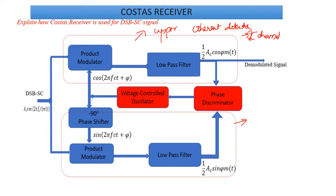Your lower part is called your lower coherent detector, also called the quadrature channel or Q channel. And in the middle, you will have a combination of your phase discriminator and a voltage controlled oscillator. Let me give you an overall view of how the circuit works.